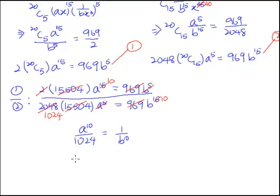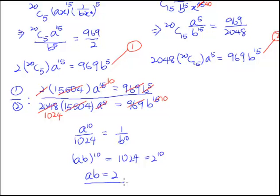Cross-multiplying, we get (ab) raised to the power of 10 equals 1024. You can use your calculator to take the 10th root of 1024; some may know that 1024 is 2 to the power of 10. Either way, the 10th root of 1024 gives 2, so ab equals 2. But this doesn't fully solve the problem, because we're interested in the individual values of a and b. However, this is a very important result. We shall call this equation 3.